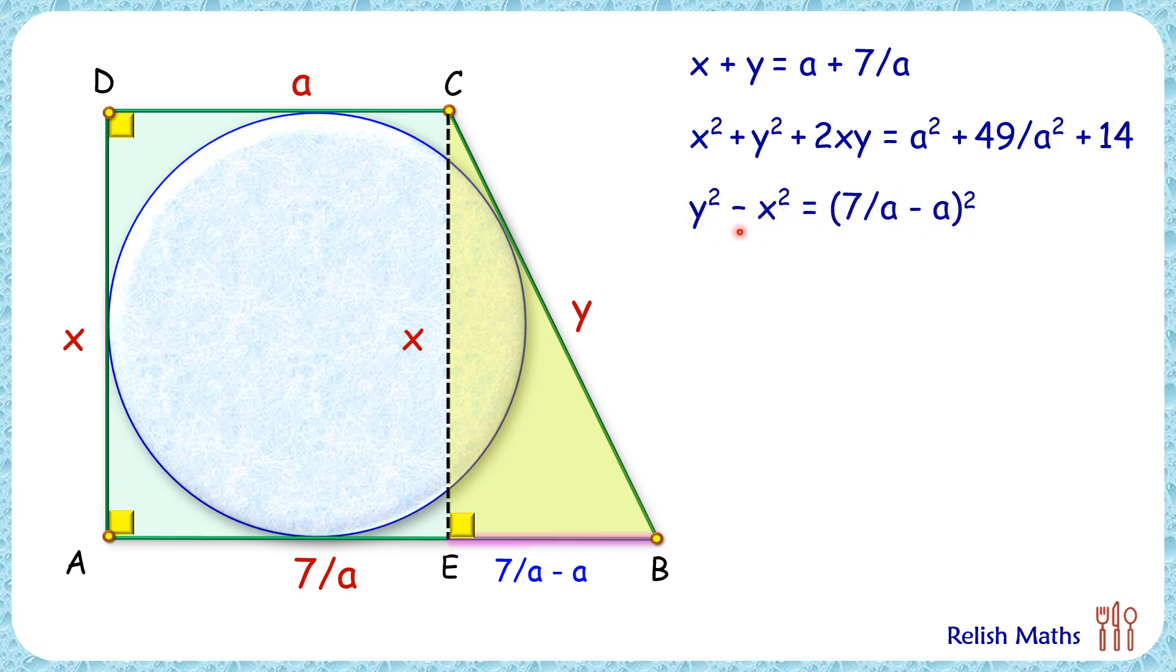Let's rearrange these terms to get y² - x² = (7/a - a)². Now let's open the bracket in the RHS. Now these two equations, let's subtract them. When we are subtracting, in the LHS y² will get cancelled, and in the RHS a² and 49/a² will get cancelled down. So LHS will be 2x² + 2xy and RHS will be 14 + 14 or 28.